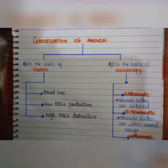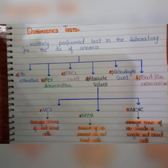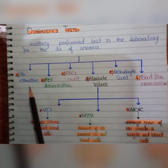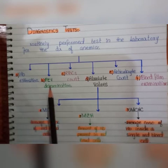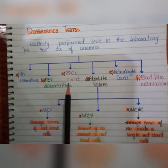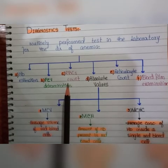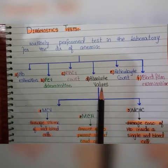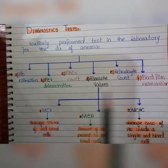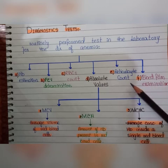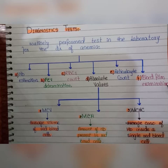The diagnostic tests routinely performed in the laboratory for diagnosis of anemia include: hemoglobin estimation, PCV (packed cell volume) determination, RBC count, absolute values, reticulocyte count, and blood film examination.